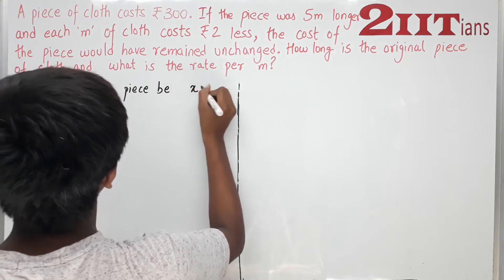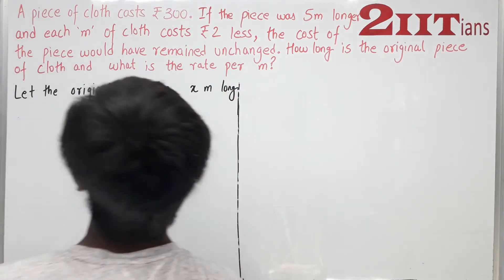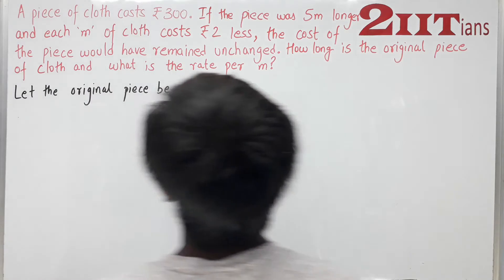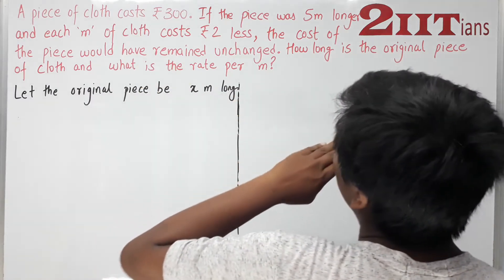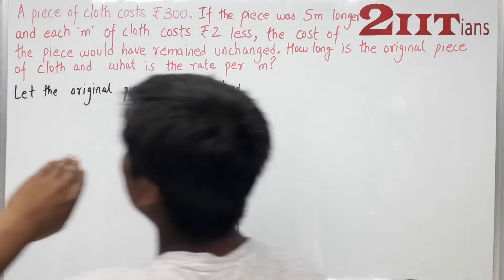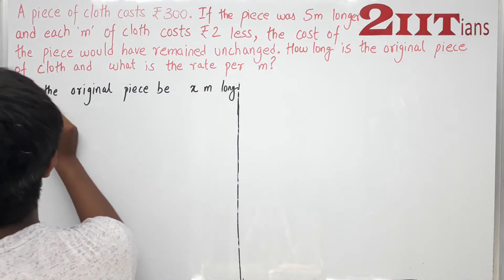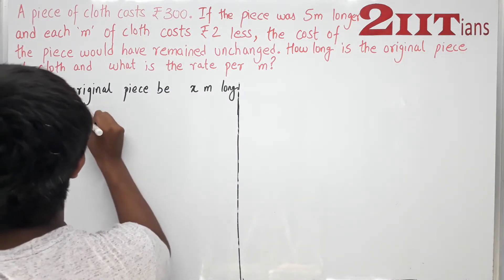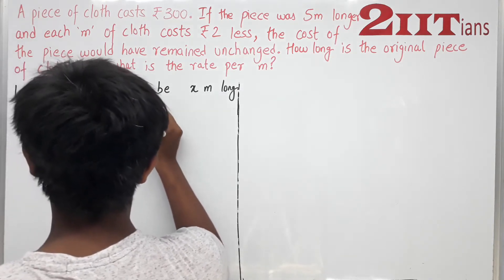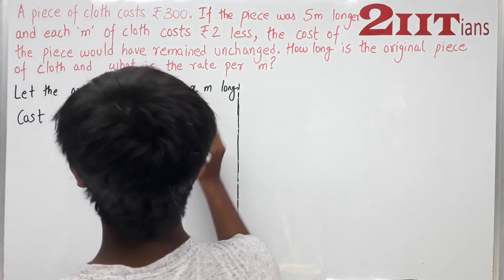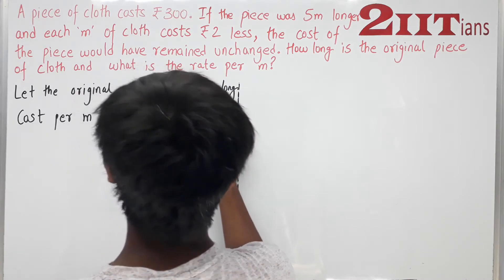Let the original piece be x meters long. The total cost is Rs. 300, so the cost per meter originally is 300 divided by x.